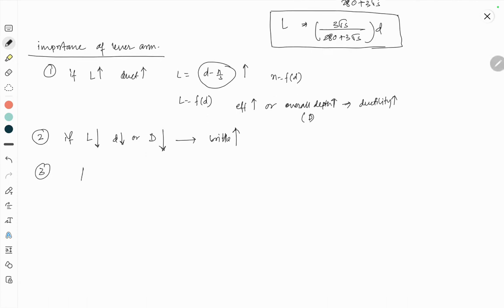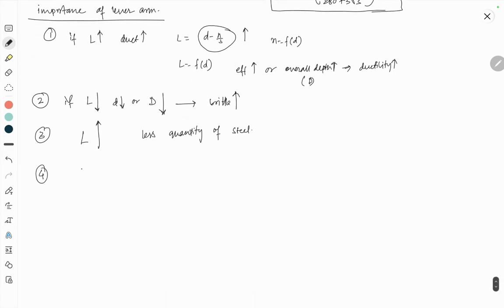Third, if lever arm is increasing, then you should need less quantity of steel. And if lever arm is decreasing, then you should need higher or more quantity of steel.